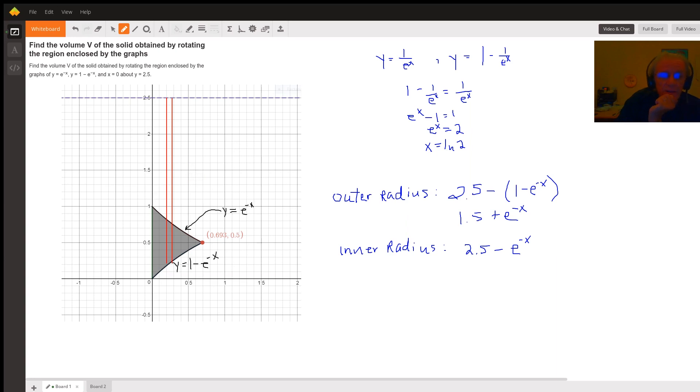Apparently the washer method will be much easier to use than the shell method, although I'm going to provide a link to the Desmos graph where I got this, where I also calculate the volume of revolution using the shell method. And you'll see it's quite a bit more complicated.